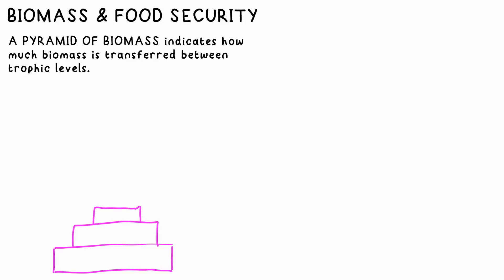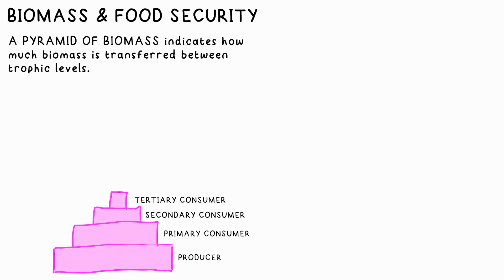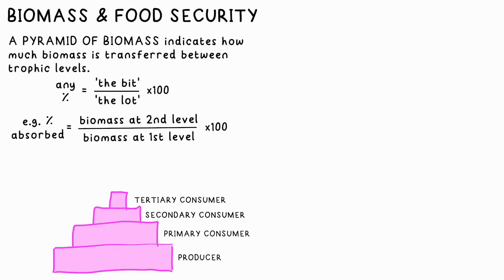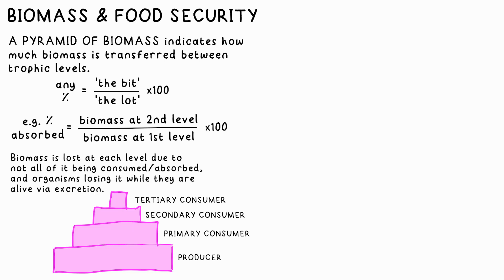A pyramid of biomass is a way of viewing a food chain, which shows us how much mass enters the next trophic level, relatively. You need to be able to draw one on graph paper using numbers supplied in the question, and also calculate the percentage absorbed by the next level — any percentage is equal to the part divided by the total times 100. It's always a pyramid, which shows us that biomass is lost at each level, as not all biomass is absorbed or consumed into the next organism. Some is lost due to the organisms living for some time before being eaten — they have to move, they have to excrete. Biomass is also lost as water, urea, and CO2.